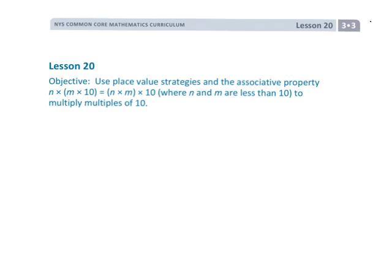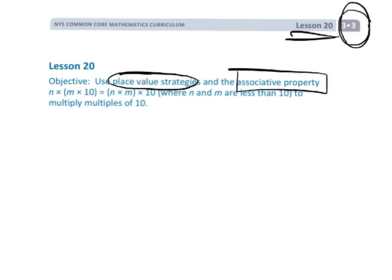Alright, this is Grade 3, Module 3, Lesson 20. In this lesson, we're going to be using place value strategies and the associative property to better understand problems like 4 times 30.